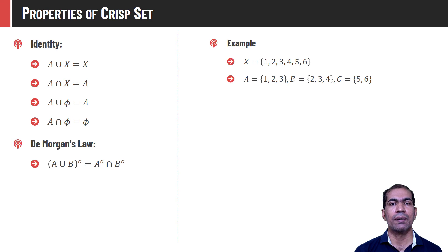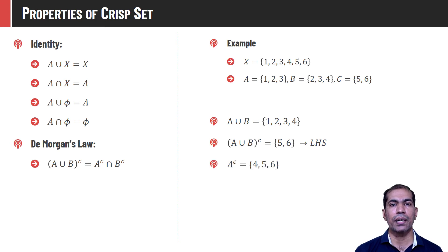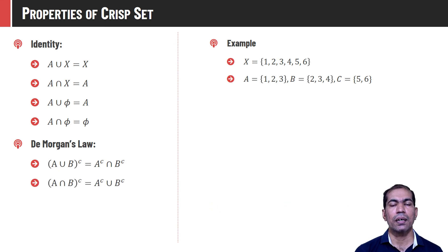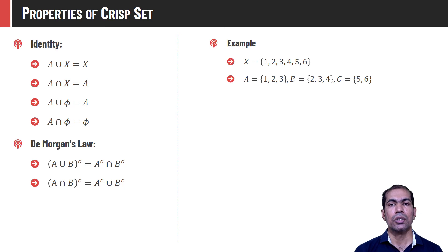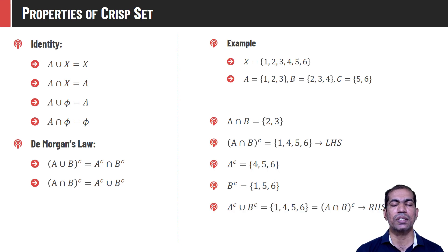Sets also follow De Morgan's laws. The first says that the complement of (A union B) is the same as A complement intersection B complement. A union B = {1, 2, 3, 4}, and the complement of that is {5, 6}. For the right-hand side, computing A complement and B complement and taking their intersection also gives {5, 6}, which equals the left-hand side. The second De Morgan's law says that the complement of (A intersection B) equals A complement union B complement. A intersection B = {2, 3}, and its complement is {1, 4, 5, 6}. A complement = {4, 5, 6} and B complement = {1, 5, 6}, and their union is {1, 4, 5, 6}, which is the same as the left-hand side.